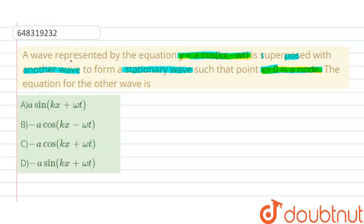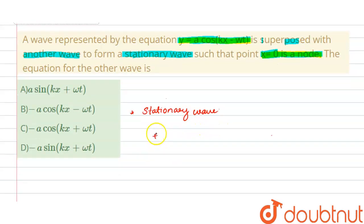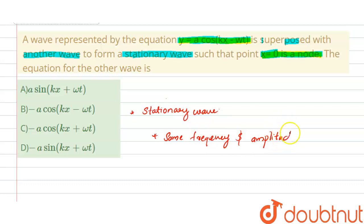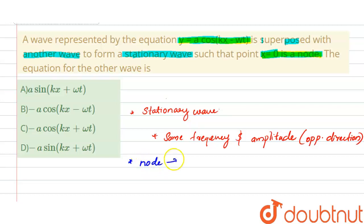A stationary wave, or standing wave, is formed when two waves of the same frequency and amplitude travel in opposite directions. A node is a place in a stationary wave where the amplitude is zero.